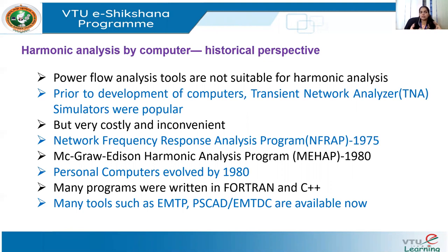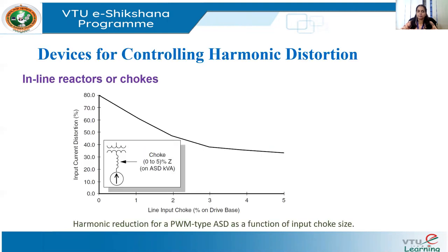So far, we have discussed why we need to do harmonic analysis, the steps to follow, how to model a system and harmonic sources, and the main requirements of a computer tool. Now we are going to the next topic: devices used for controlling harmonics, or mitigating harmonic distortion. In the first lecture of Module 4, a brief introduction was given about mitigation solutions such as filters, and we are going to deal with those topics in a little more detail here.